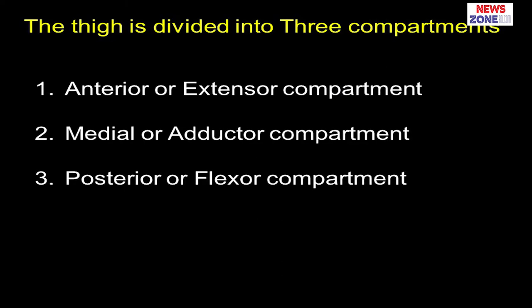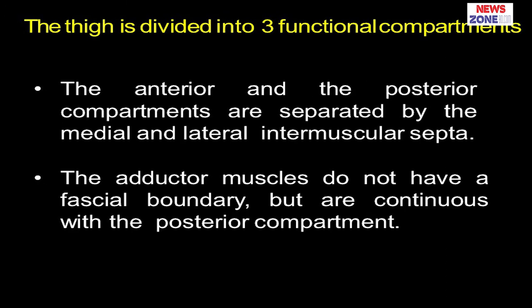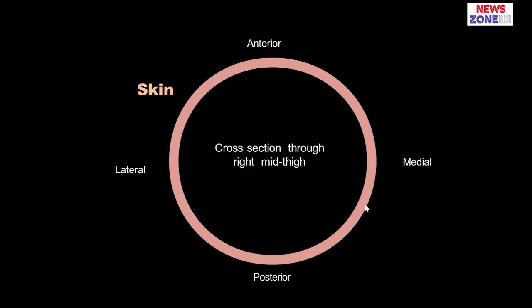The main topic of today's discussion is the three compartments of the thigh. The thigh has an anterior or extensor compartment, medial or adductor compartment, and posterior or flexor compartment. The anterior and the posterior compartments are separated by the medial and lateral intramuscular septa. The adductor muscles do not have a fascial boundary, but are continuous with the posterior compartment. So let's see the organization.